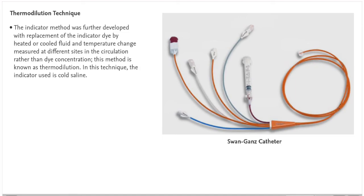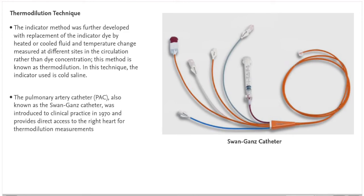In this technique, the indicator used is cold saline. The pulmonary artery catheter, PAC, also known as the Swan-Ganz catheter, was introduced to clinical practice in 1970 and provides direct access to the right heart for thermodilution measurements.